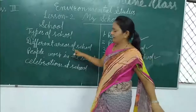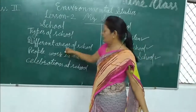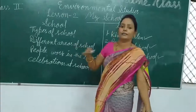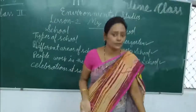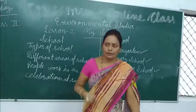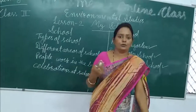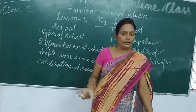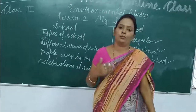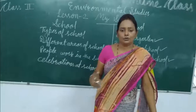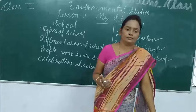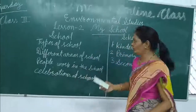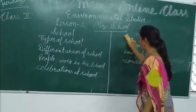We will see different areas of school. Different areas of school means the different parts of school — the different places in school where we go. For example, we go in the classroom for study, in the music room to learn music, in the library for reading and borrowing books, and to the computer lab for computer practicals. There are so many places.